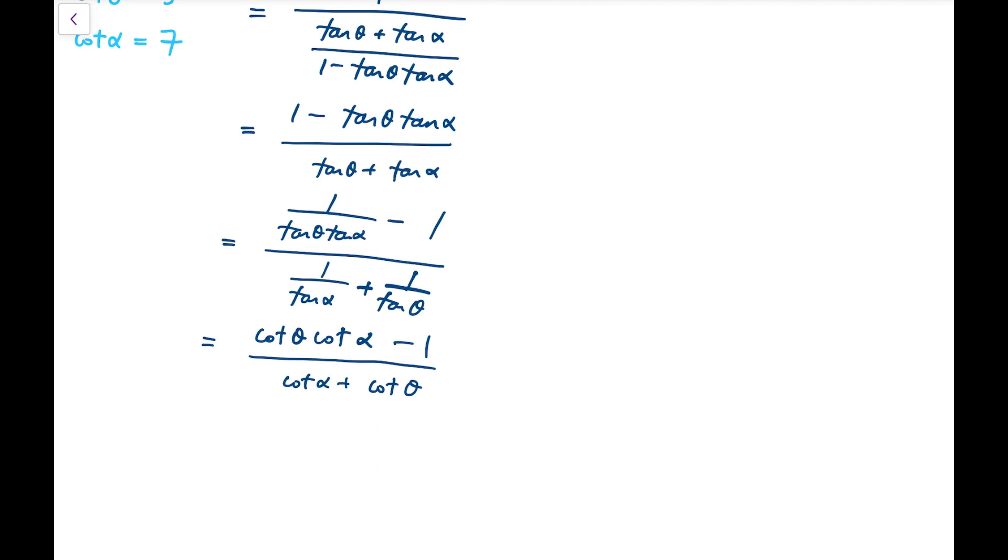Now from this, we can say that if I only consider the first two angles, then I'll get 3 times 7 minus 1 over 3 plus 7, and that's 2. So this is what's going to happen if I only consider the first two angles.